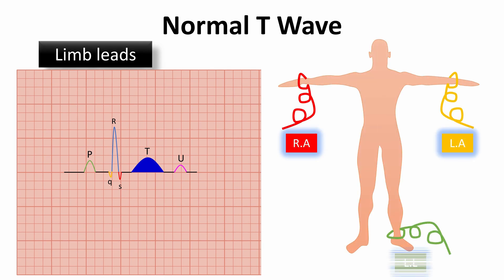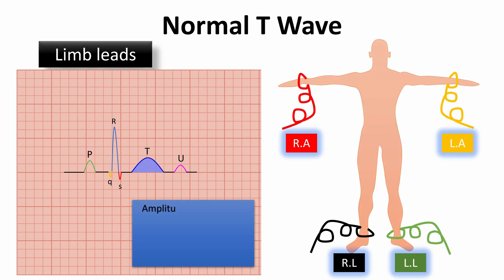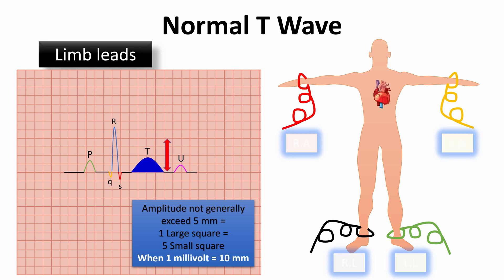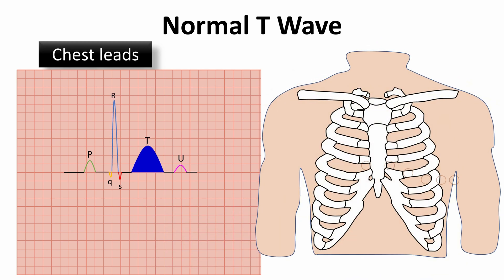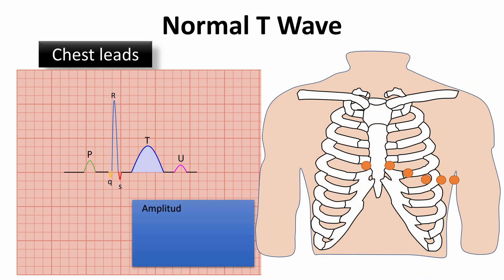The normal T wave amplitude does not generally exceed 5 mm, which equals one large square or five small squares in limb leads when one millivolt equals 10 mm. Also, it does not generally exceed 10 mm, which equals two large squares or ten small squares in precordial leads when one millivolt equals 10 mm.